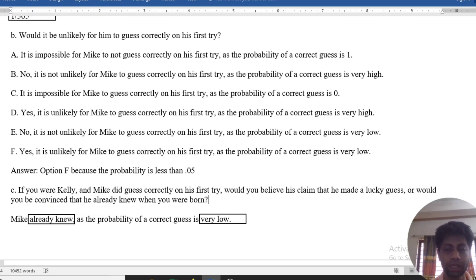So, Mike already knew the probability of a correct guess is very low. So, our answer is he already knew, and the probability is very low.